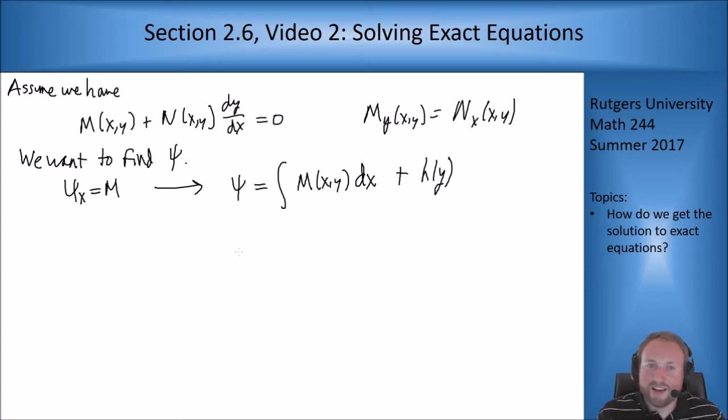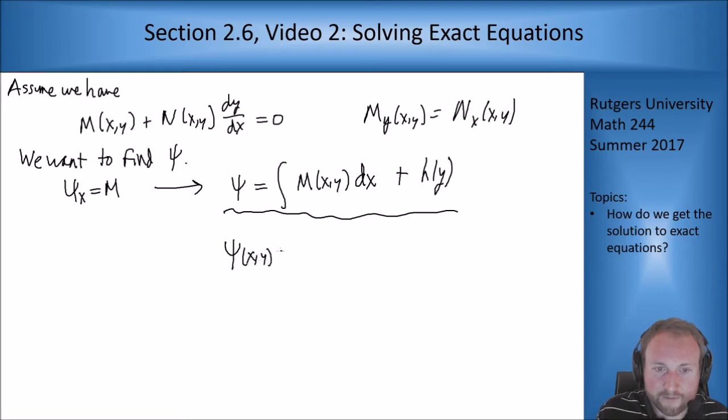However, this is bad notation because ψ is a function of x and y and I have x as an integral and x is outside. So how you should really write this is this: You want to have ψ(x,y) be an integral of M(s,y)ds plus h(y), where this integral is going from zero to x.